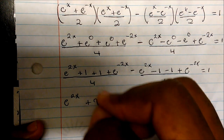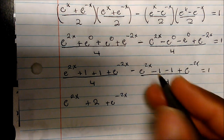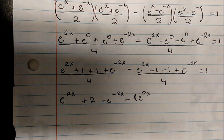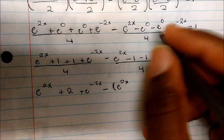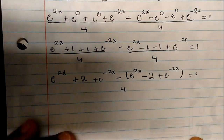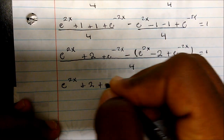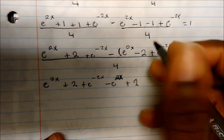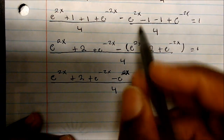So we have e to the 2x plus 2 plus e to the negative 2x. We need to distribute our negative, so this becomes minus e to the 2x, minus 2, plus negative e to the negative 2x. That is equal to 1, and this is all over 4. Distributing the negative gives us e to the 2x plus 2 plus e to the negative 2x minus e to the 2x plus 2 minus e to the negative 2x, all equal to 1 over 4.